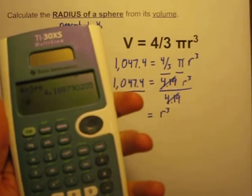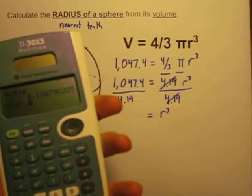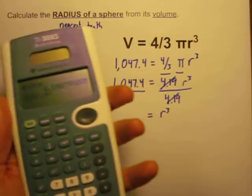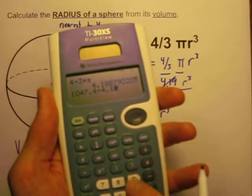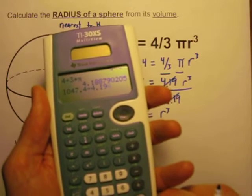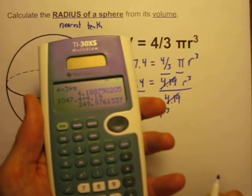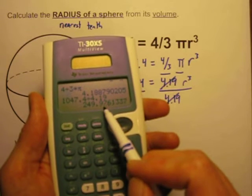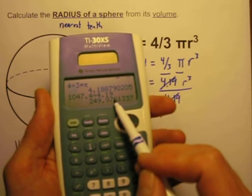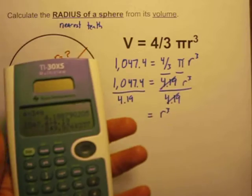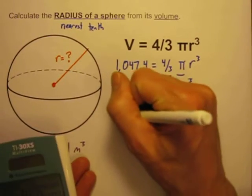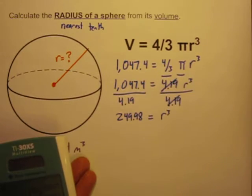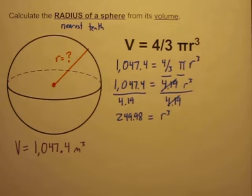And when I do, I'm going to get 1,047.4 divided by 4.19. And again, I'm going to round to the nearest hundredth place. So that's 249.976. So I'll round that up to .98. So that was 249.98 is equal to r to the third power.